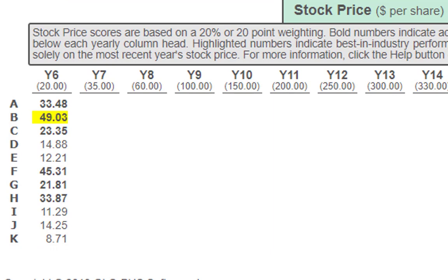Stock price: team B is the highest — great job team B. Teams A, C, F, G, and H are all meeting expectations — excellent. Teams D, E, I, J, and K are not yet meeting expectations, but it's just one year. Keep an eye on it and make sure you improve. You might not meet expectations within year seven, but as long as you're moving forward, that's what you want to look at.